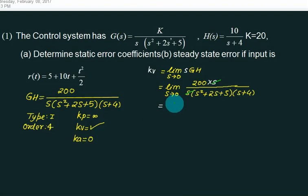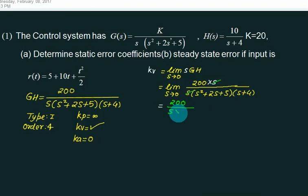So this one is 200, denominator: 0, 0, 0, 5, this one is 4, this one is 20, answer is 10.